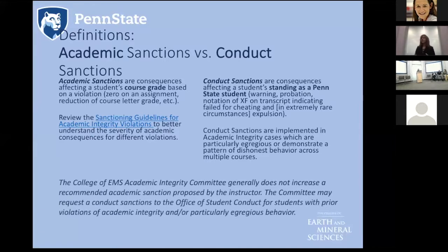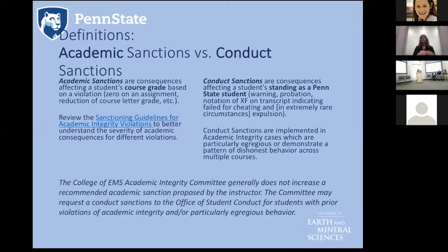The committee discussed whether a prior offense should automatically increase the academic sanction or trigger a conduct sanction. We decided it makes more sense for each course grade to represent what the violation was in that particular course — keeping the original academic sanction the instructor requested — but adding a conduct sanction if there are priors. This separates the two: instructors aren't changing grades based on what happened in completely different courses, and it's a cleaner representation of what the student actually did.